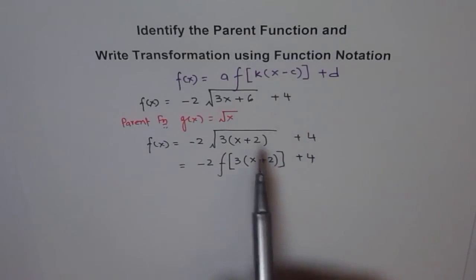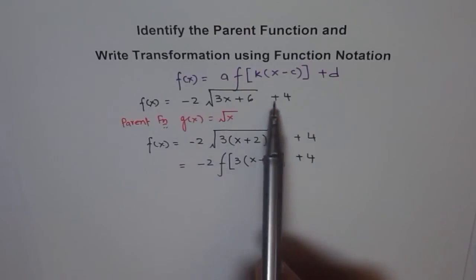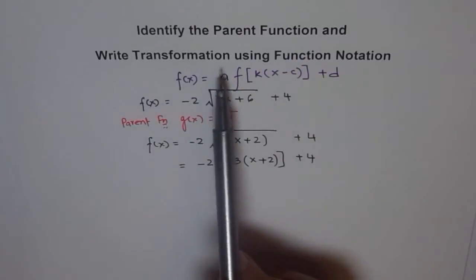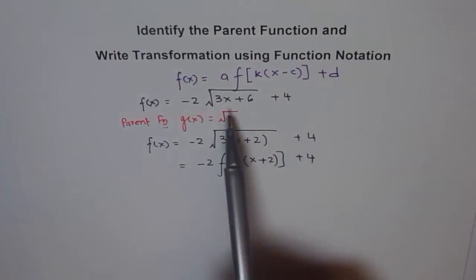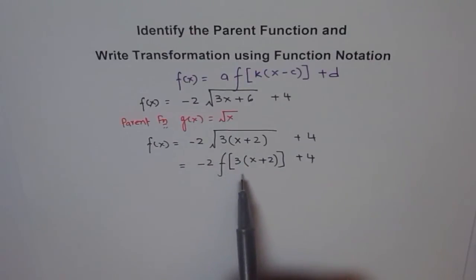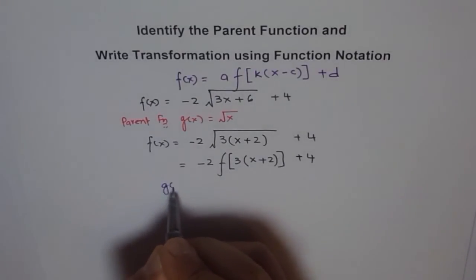And plus 4 means that you have to translate 4 units up. I hope you understand. If I give you a function in this form and ask you write transformation using function notation, you are expected to write like this. Okay, well, you can try this problem on your own as an exercise, right?